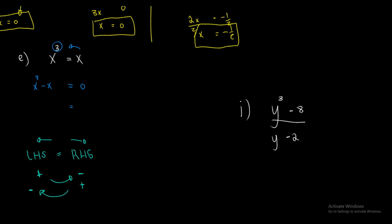I can factor — both terms contain an X. I can factor out an X. If I multiply it back in, it's just X cubed minus X, the exact same equation. Now we can already see that the first X is equal to 0, based on what I did in my previous example. But now we're left with X squared minus 1 is equal to 0.